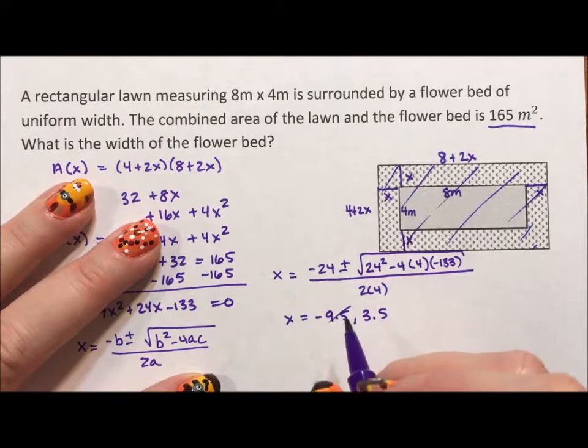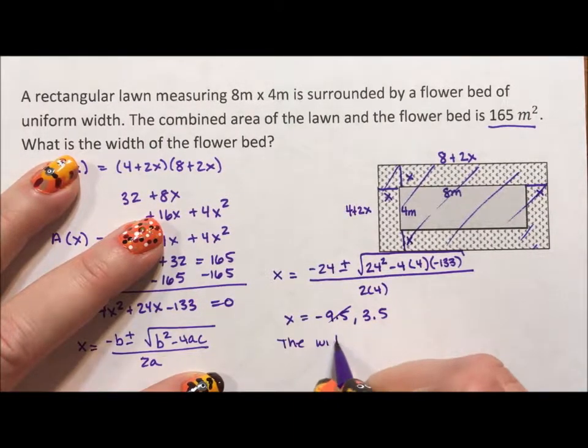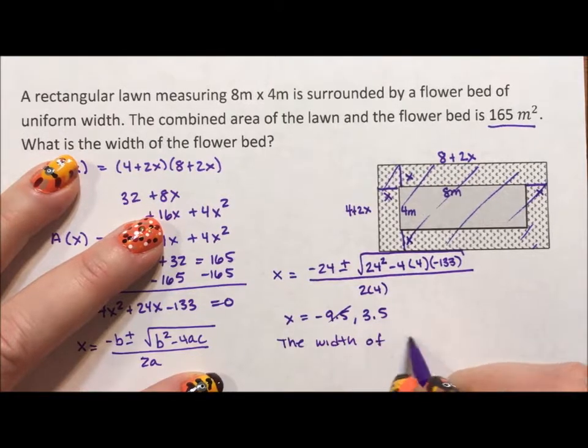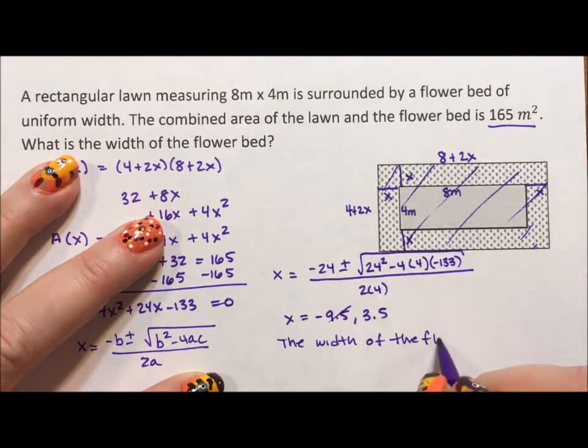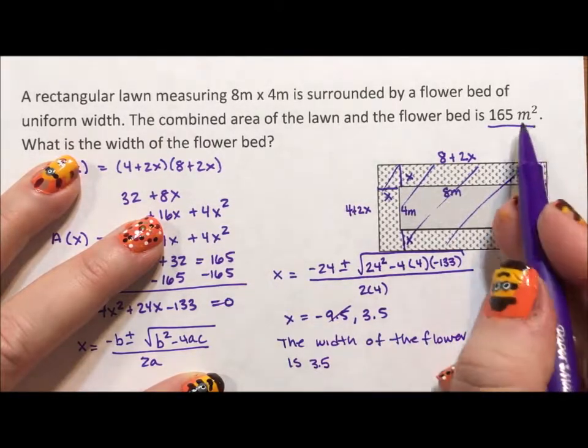So what is the width of the flower bed? The width of the flower bed is 3.5 meters.